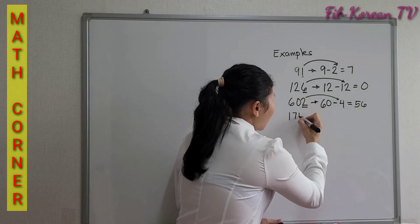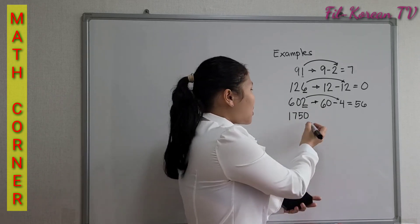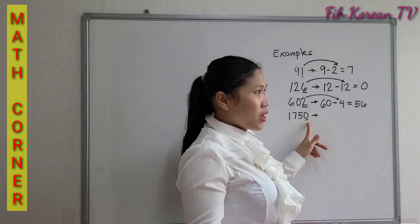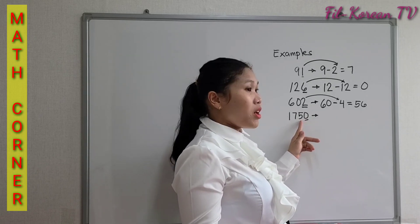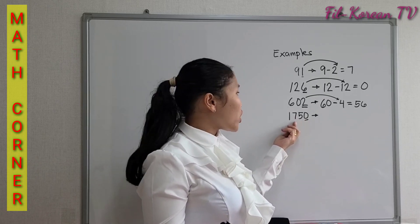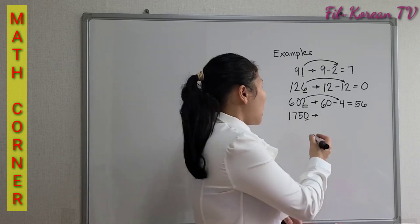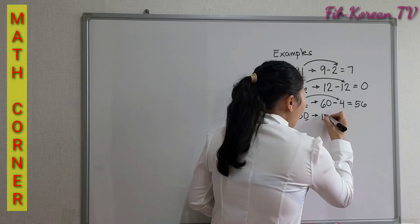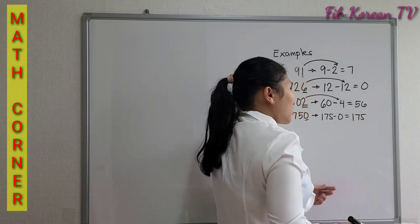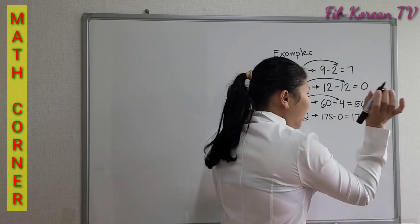Next example: 1,750. This number ends with 0. If we double 0, it is still 0, and if we subtract 0 from 175, the answer is still 175. If you are not sure whether 175 is a multiple of 7, you can repeat the rule again, since it is a higher number.